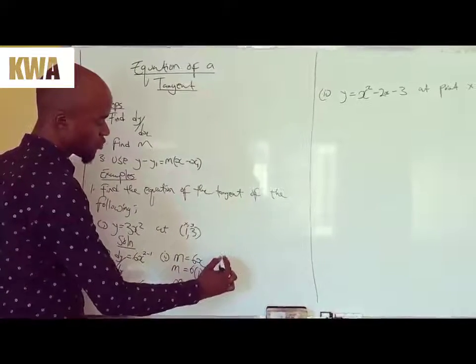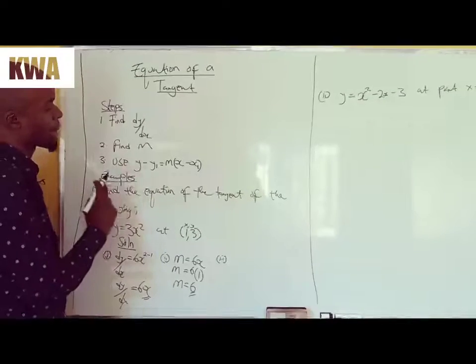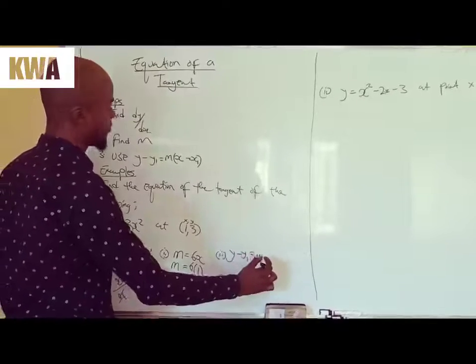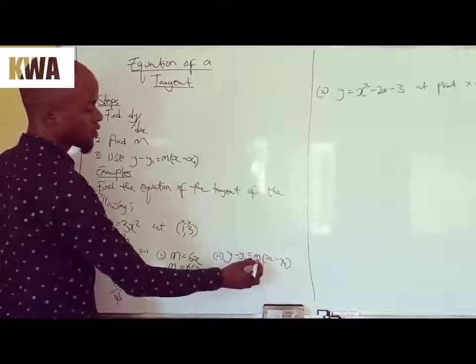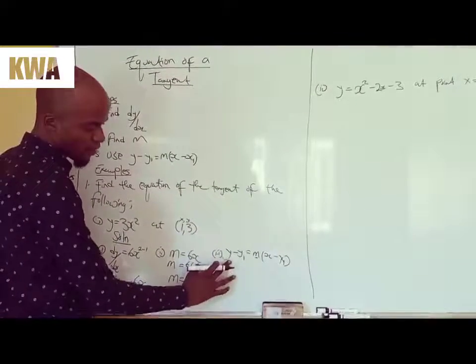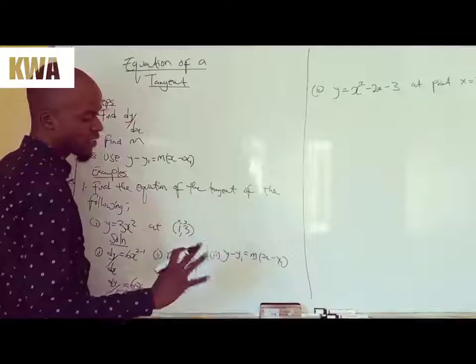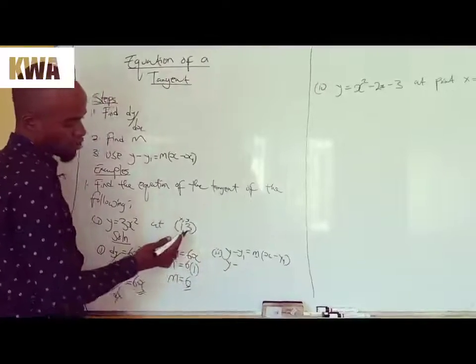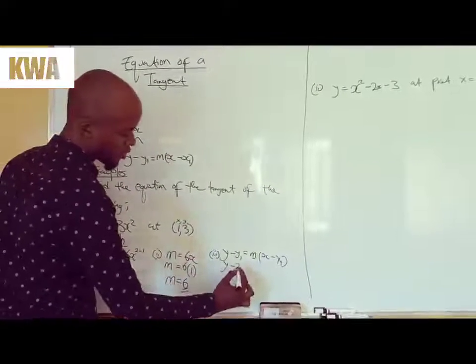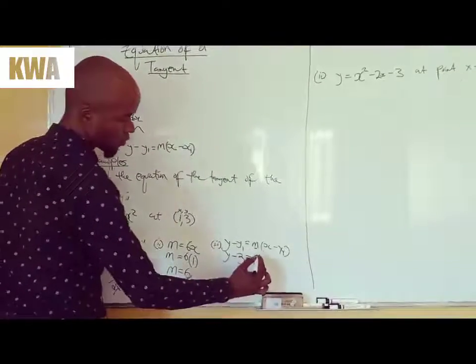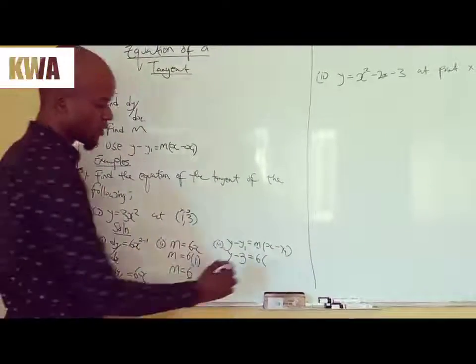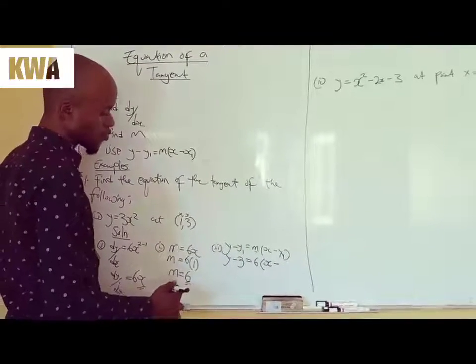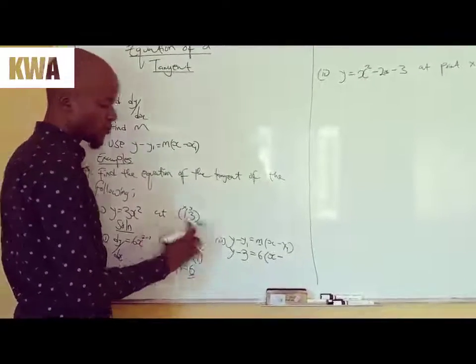Then the last step now is to use this formula. So you have y minus y1 equals m, x minus x1. So this m stands for gradient. This y where there's nothing and the x, we don't put anything. So I'm just going to put y minus y1, y1 is here on the coordinates which is 3. So 3 is equals to m, I found 6, so I put 6. x I don't put anything, so I put x minus x1, x1 is what you have been given, so 1 here.